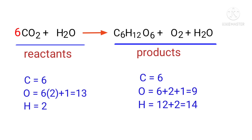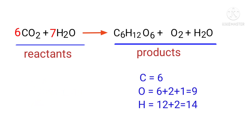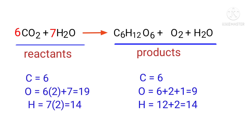Now we need to balance the hydrogen atoms. To do this we need to put a coefficient of 7 in front of H₂O. The hydrogen atoms are now balanced.